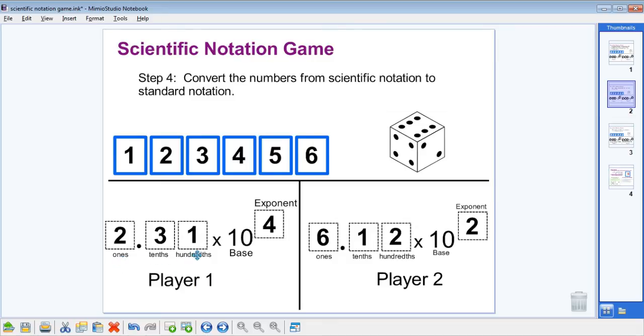Two and thirty-one hundredths becomes a much bigger number. When we get over here to six and twelve hundredths, multiplied by ten to the second power, that player will move the decimal point two places to the right, because they're multiplying it by one hundred.